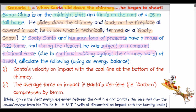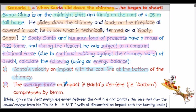We're asked to calculate the following using an energy balance, as reviewed in our previous lectures. Part one: find Santa's velocity on impact with the coal fire at the bottom of the chimney. And part two: calculate the average force on impact if Santa's derriere — that's his bottom — compresses by 18 millimetres.